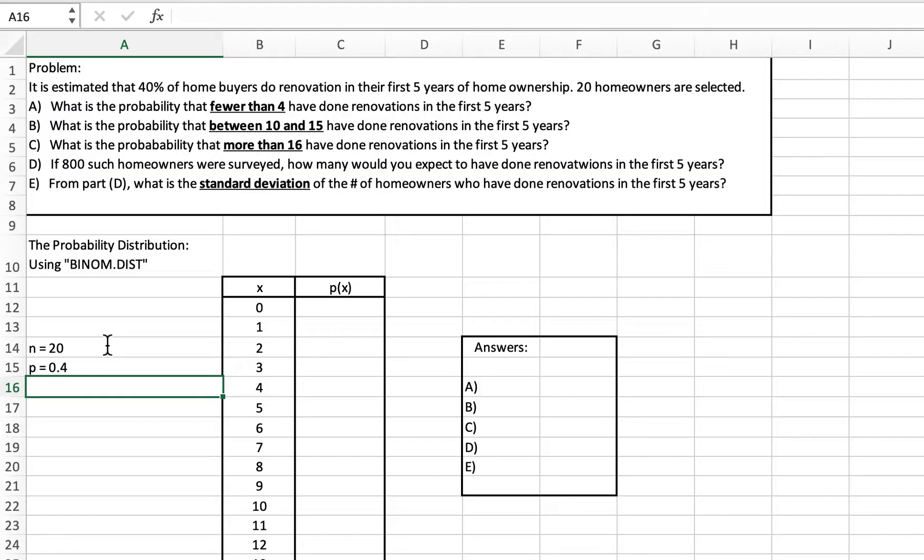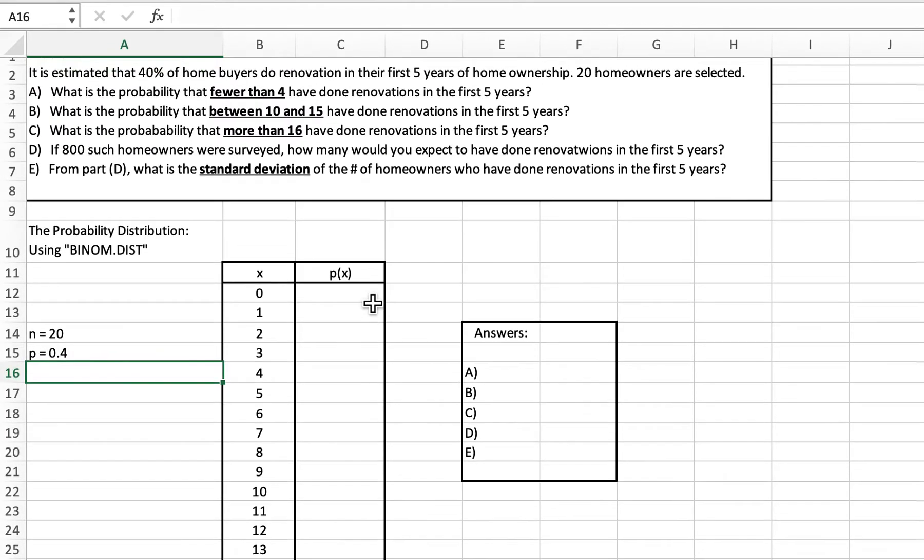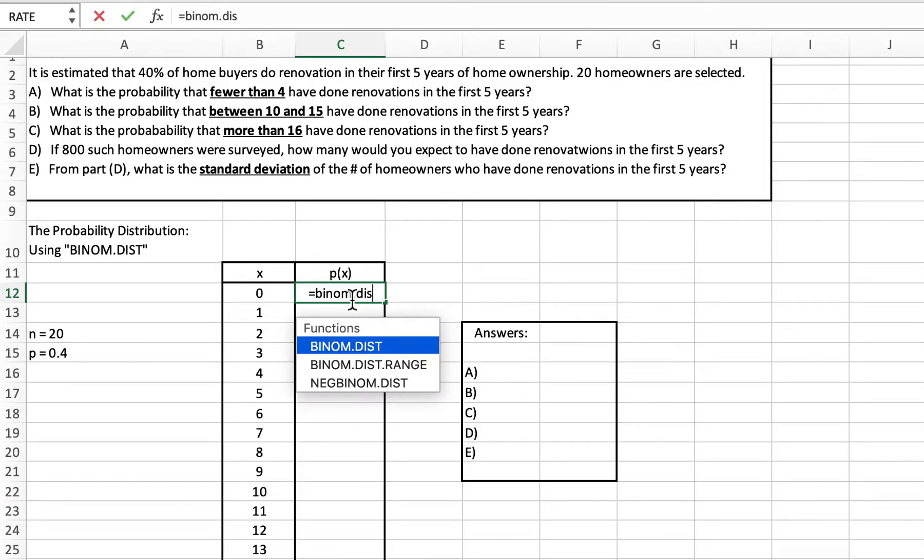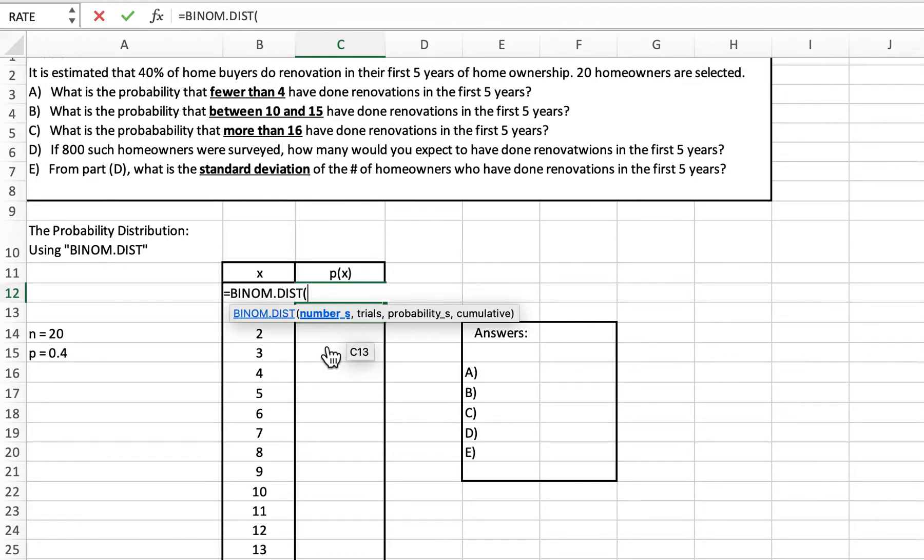We're going to be looking at probabilities involving different numbers of successes. One way to handle a problem like this, especially when you have a larger number of trials, is we could create a probability distribution. The first thing I want to talk about is a function called binom.dist. What that finds for us is a binomial probability when we feed it some information. The inputs it's expecting are the number of successes, the number of trials, the probability of success, and whether we're finding a cumulative probability or an individual probability.